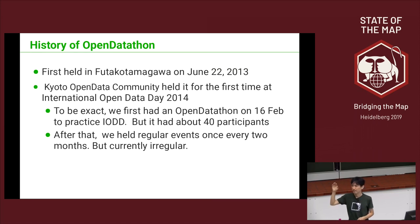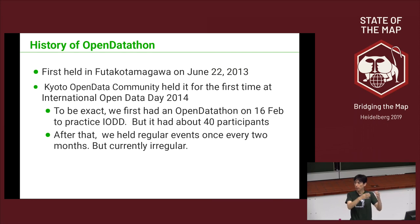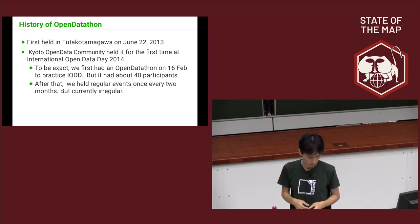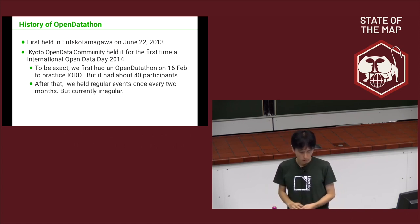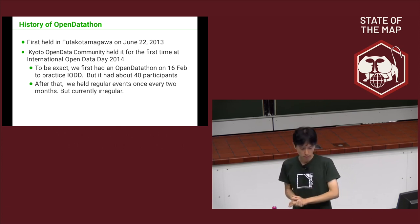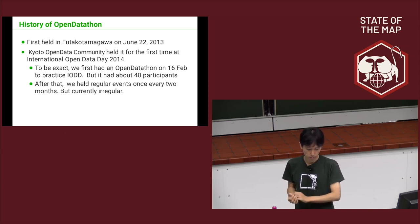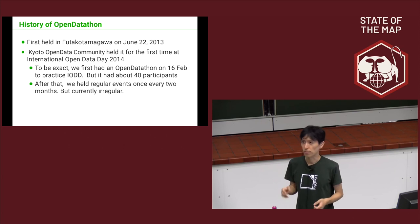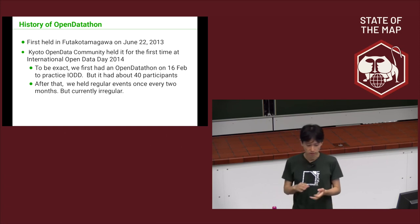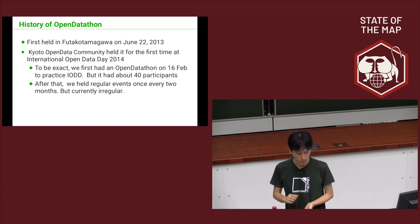International Open Data Day is a worldwide event where communities organize open data events on the same day. In Japan, many, many communities joined this event. We first challenged it in 2014. It was a testing event — 40 people came! It was difficult to control. After that, we held regular events once every two months. Currently it is not regular.